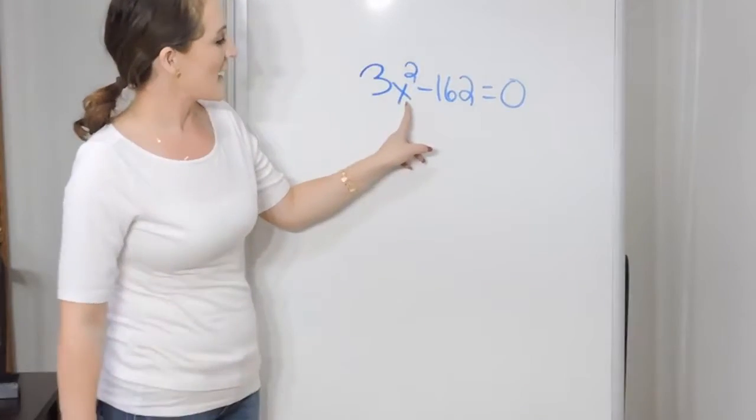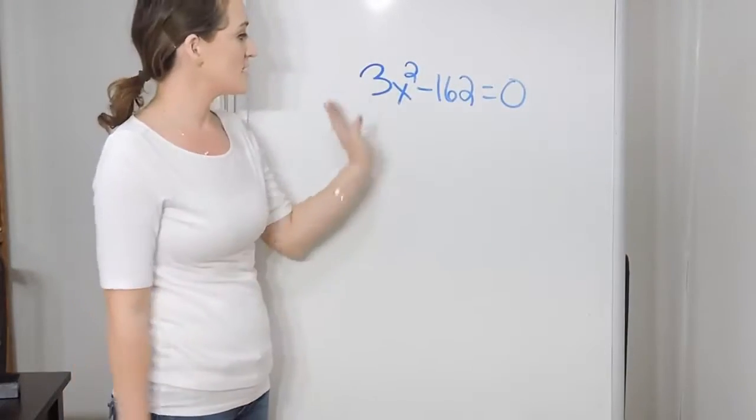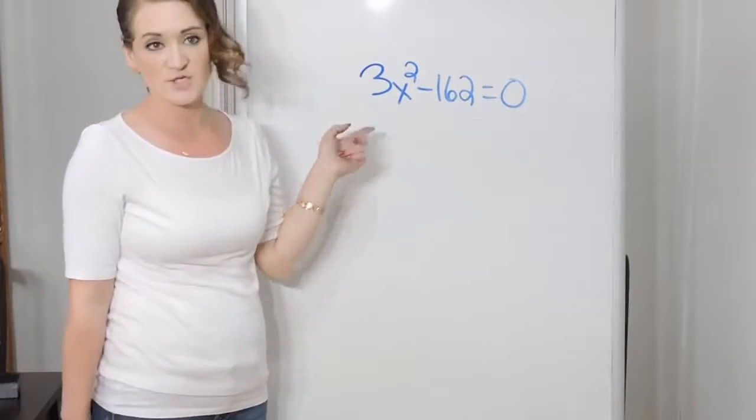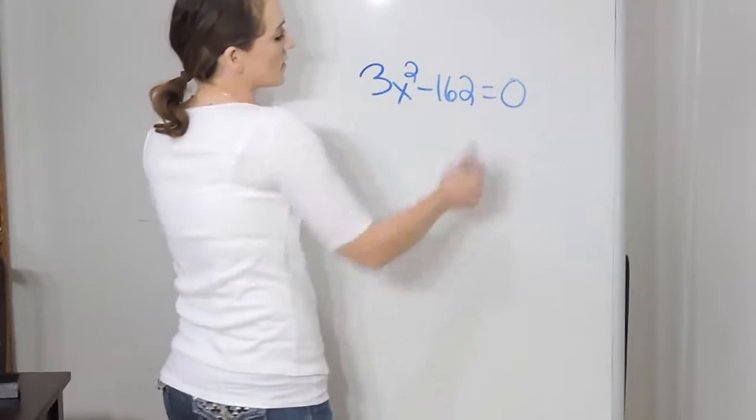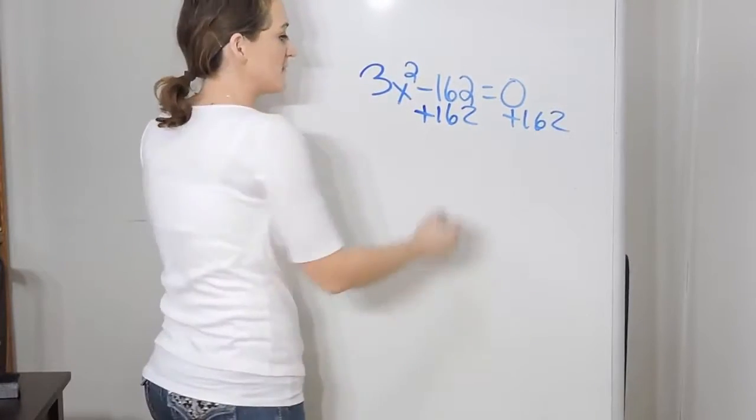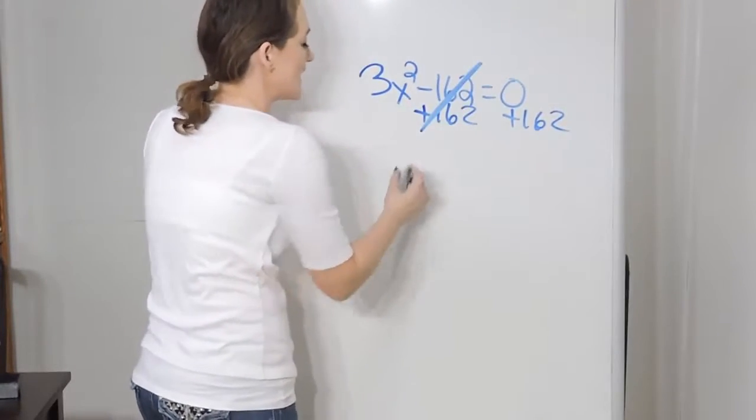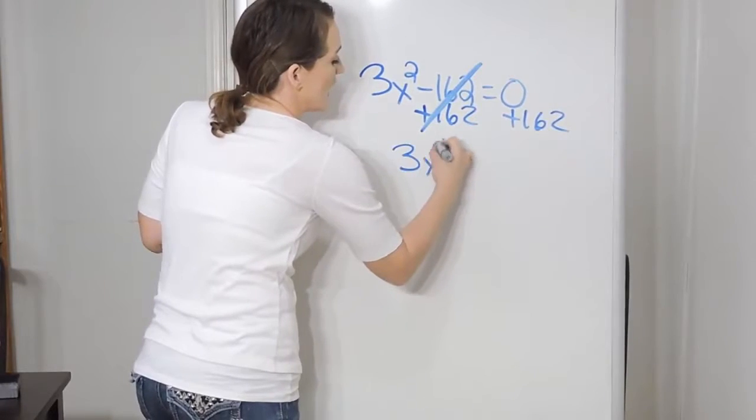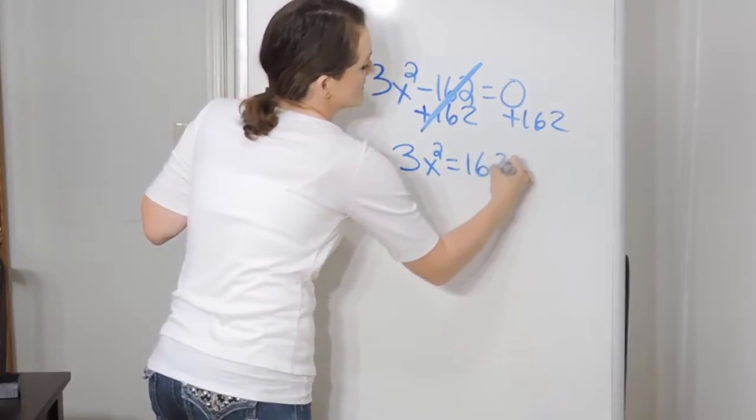If I'm trying to get x all by itself, the first thing I'm going to do is kick over that 162. It's a negative 162, so I'm going to add 162 to both sides. That's going to cancel on the left-hand side, leaving me with 3x² is equal to 162.